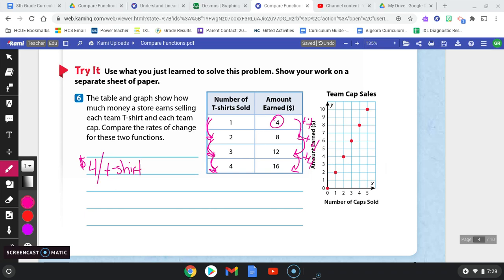They make $4 per t-shirt. Now let's look at the graph. The graph shows us the cap sales. So I'm looking at that label for the graph. Now I'm looking at how much money the store earns when they sell team caps.